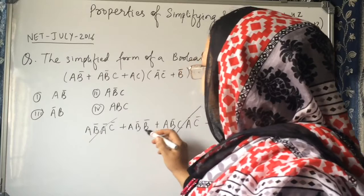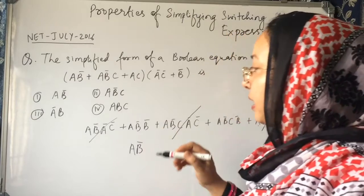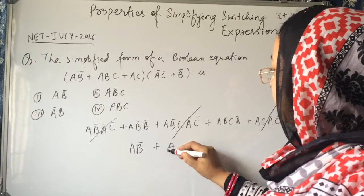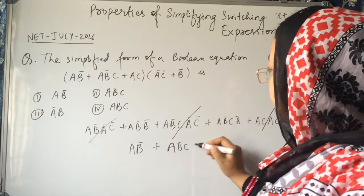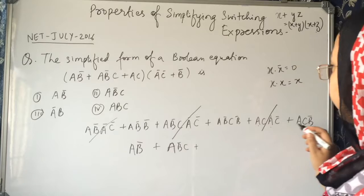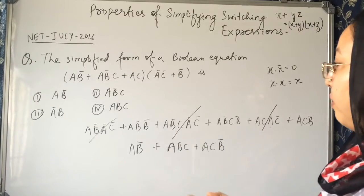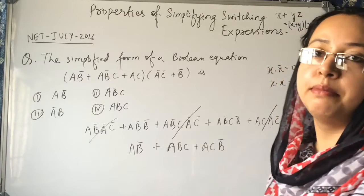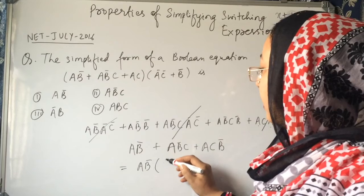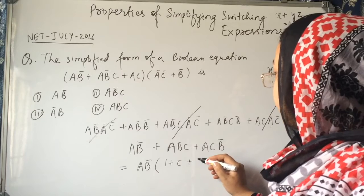Now what we have to write: in the case of ab̄ · b̄, we can write just ab̄, because x and x̄ gives x̄. And ab̄c remains as ab̄c. Then we have ac̄ and acb̄. Now we see that ab̄ is common, so we can write ab̄ times (1 + c + c).